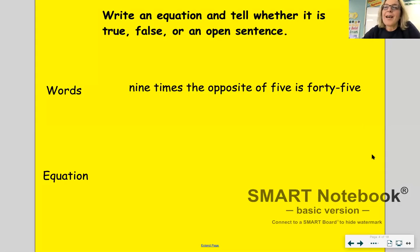So what we want to do now is examine words and take those words and put them into equation form and then to tell whether or not it's true, false, or an open sentence. So if you look at the words, it says 9 times the opposite of 5 is 45.